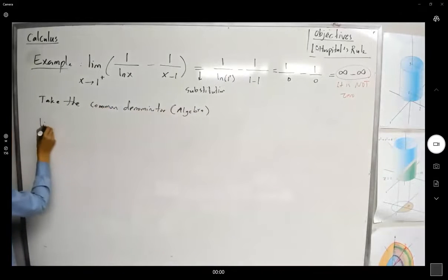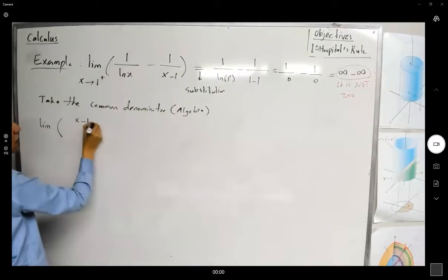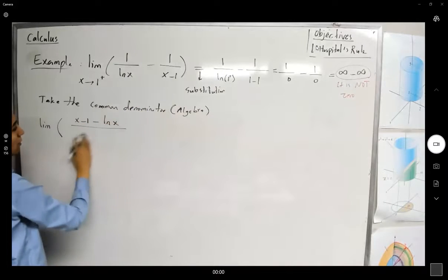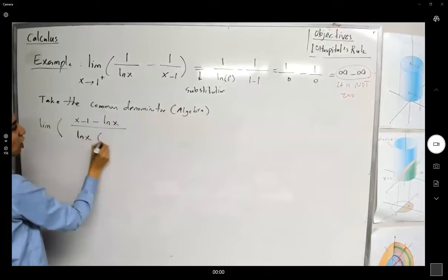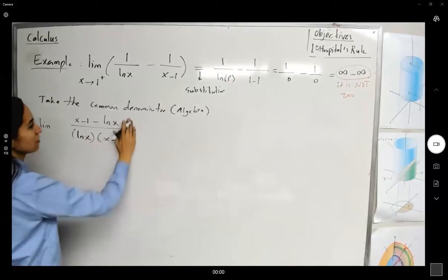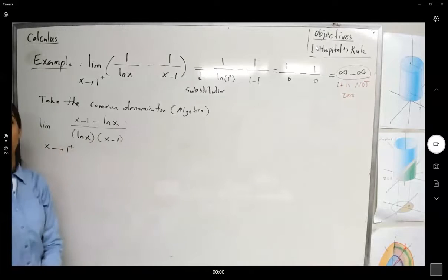So it means that you're finding the limit of x minus 1 minus ln of x divided by ln of x times x minus 1 as x goes to 1 from right-hand side. So we did some algebra. We created something new.